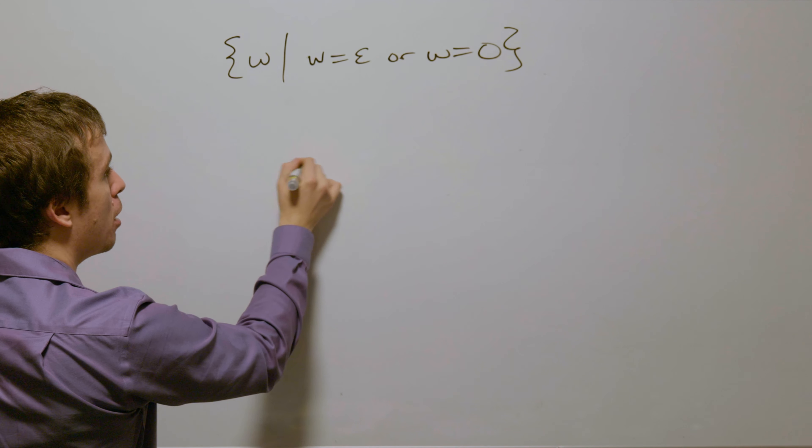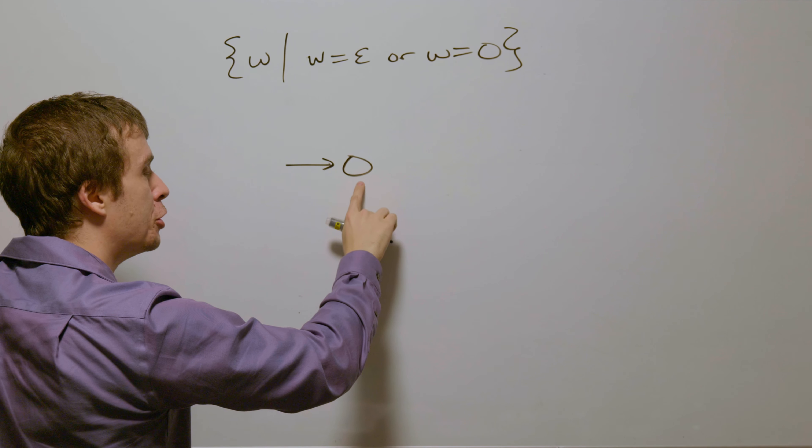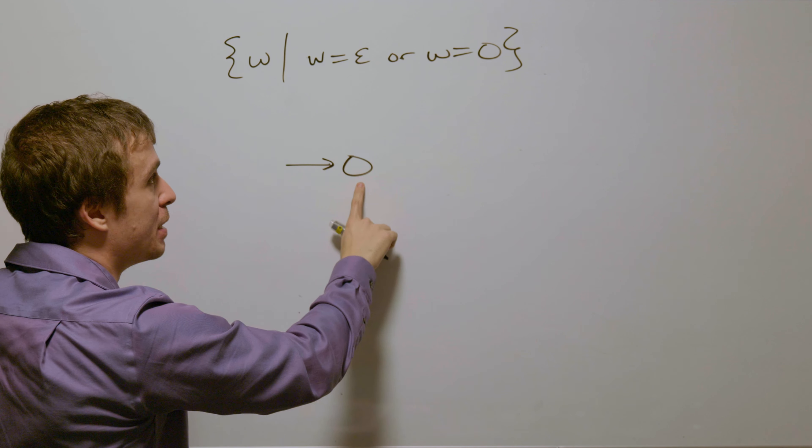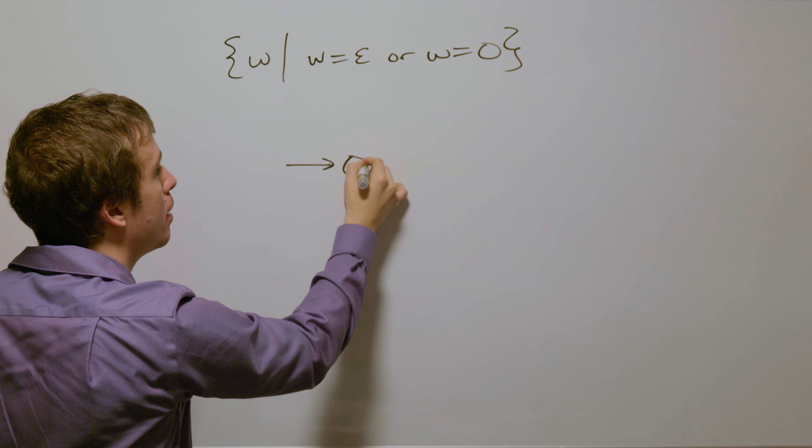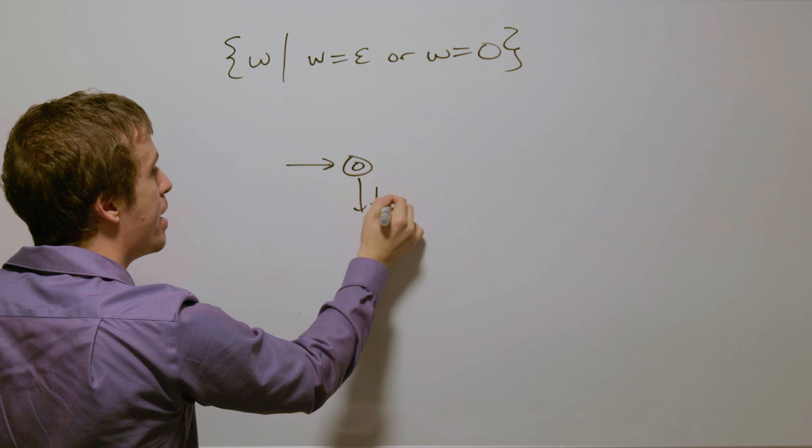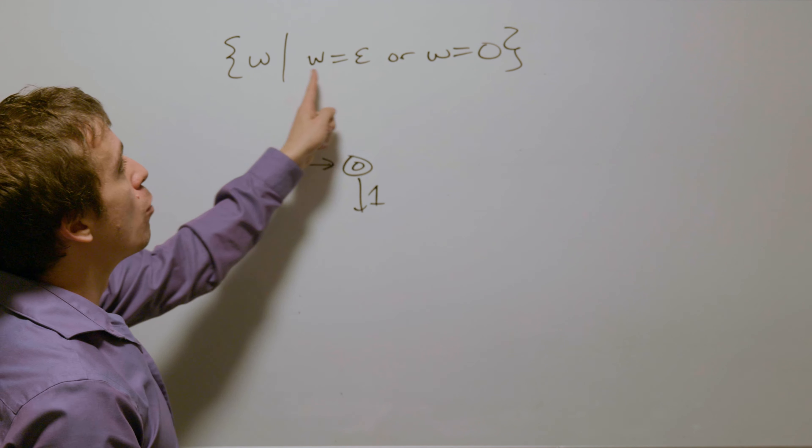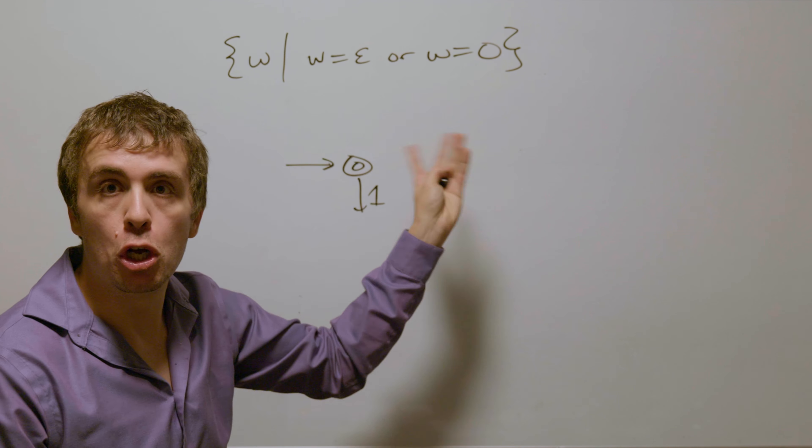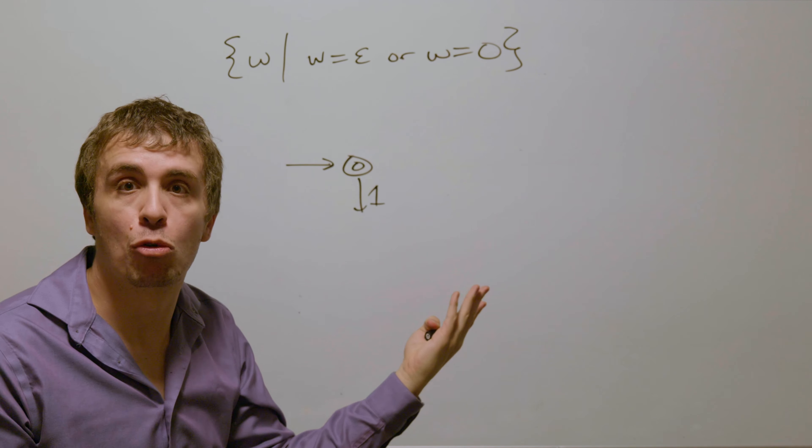So if we start building the DFA, the start state needs to be accepting because we need to accept the empty string right here. If we read a one at all, anywhere, we're going to leave this language because no string in the language has a one in it at all.